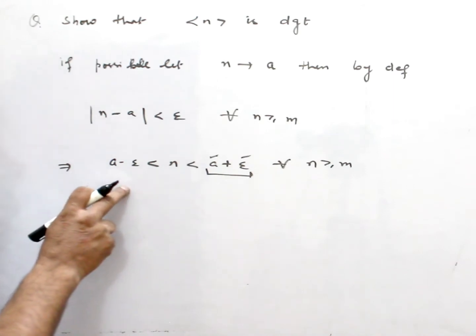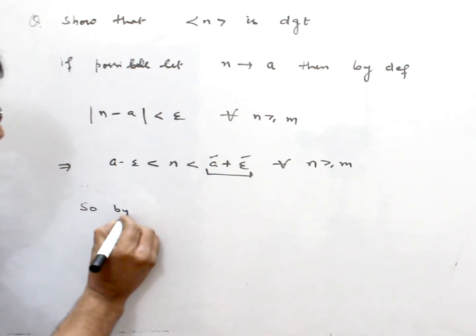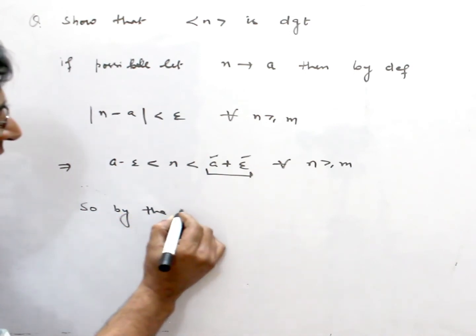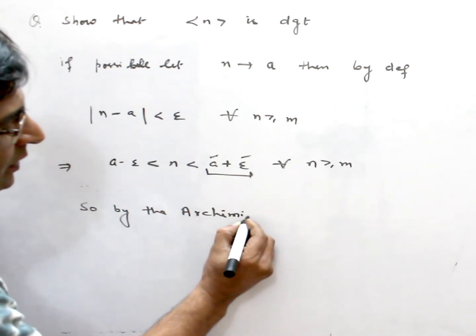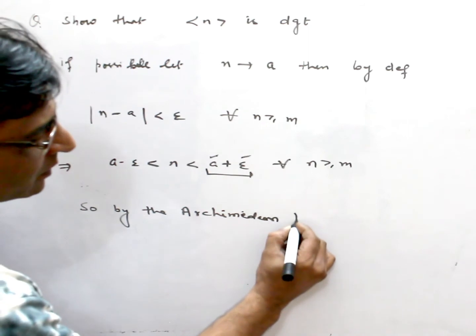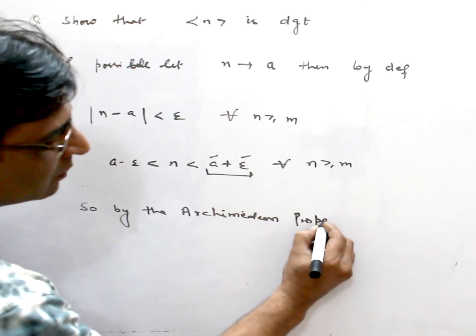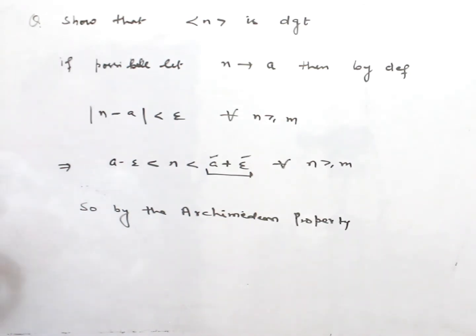By the Archimedean property. What does the Archimedean property say? For every real number, the first statement: